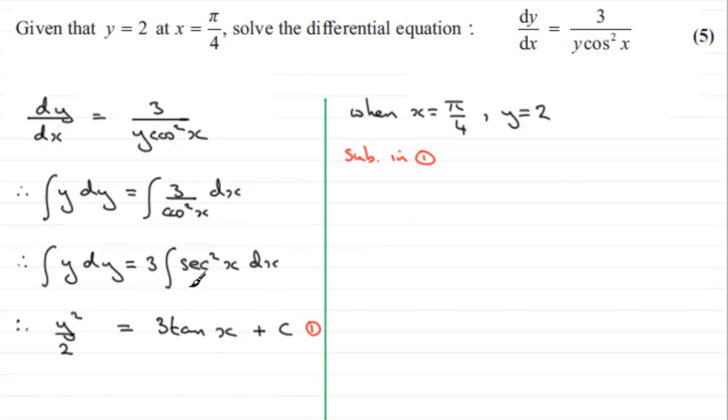What we would have then is for y, we've got y squared, which is 2 squared, and that's going to be divided by 2, and it equals 3 times the tangent of π/4. But this is not in degrees. I'm often asked how do you know it's in degrees or radians. Generally, if you've got π given, that's a clue to it being in radians.